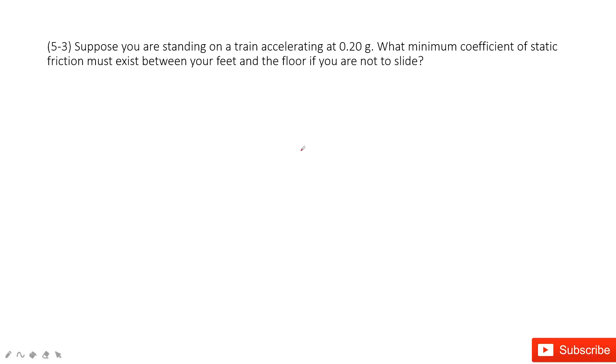In this one, we consider you as a box standing on a train. And this train has acceleration of 0.2g. So it asks you what is the minimum coefficient of static friction that keeps you and the train relatively stationary.